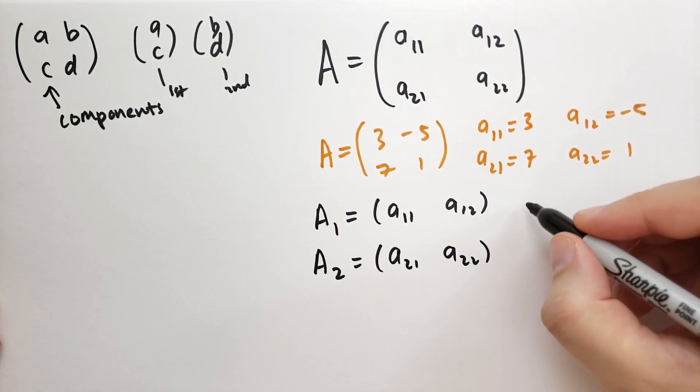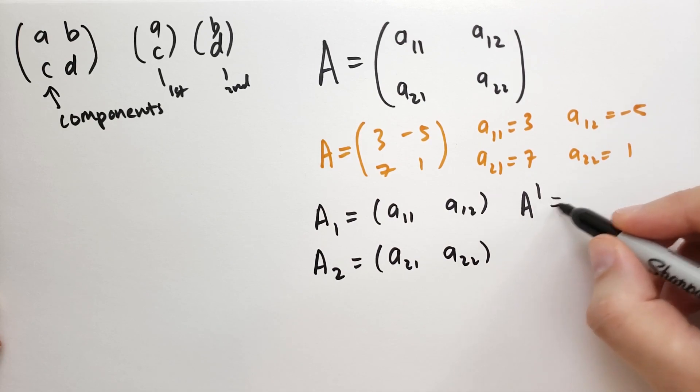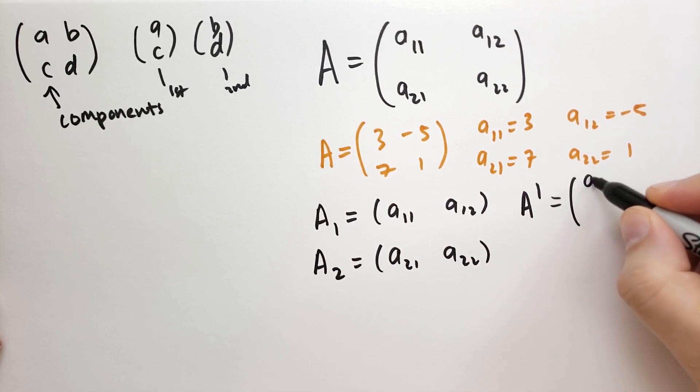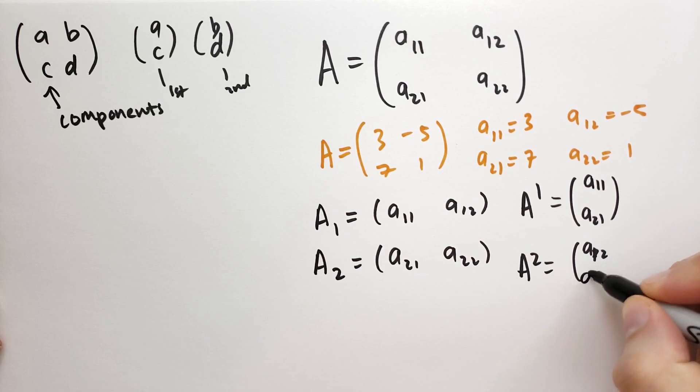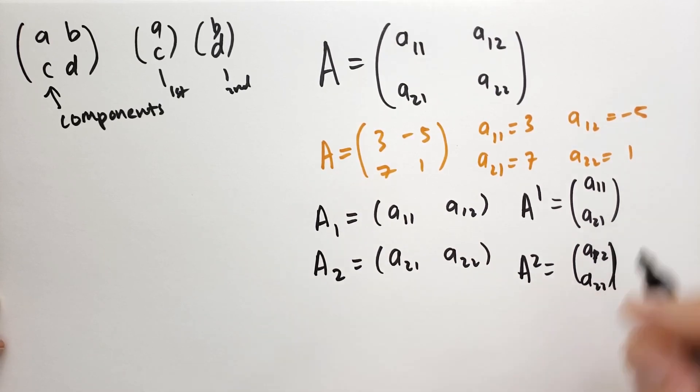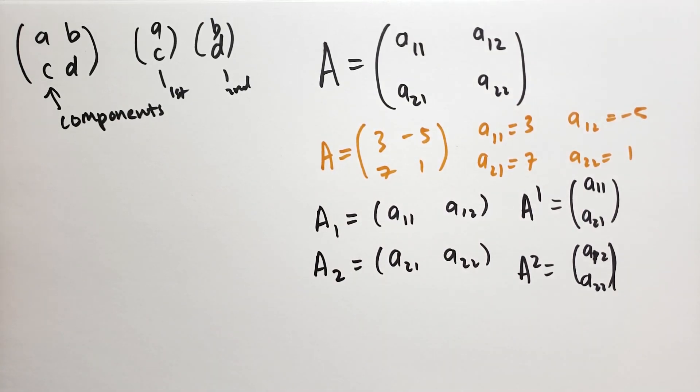If we do with a superscript, so a superscript 1, that's going to be the column a11, a21. And then a superscript 2 is a12 and a22. That's how that works. To be honest, I haven't seen this notation used very often. He uses it a couple times in this book, so you'll probably have to get used to it.